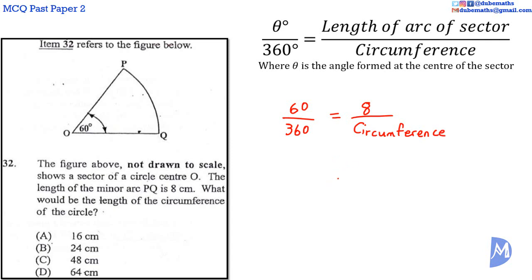We're now going to solve for the circumference. Multiplying both sides by circumference, we get that 60 over 360 multiply by the circumference is equal to 8, when you multiply by the circumference on the right-hand side. We divide both sides by 60 over 360 to remain with the circumference alone on the left-hand side.